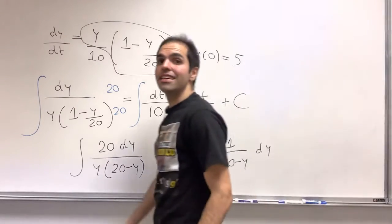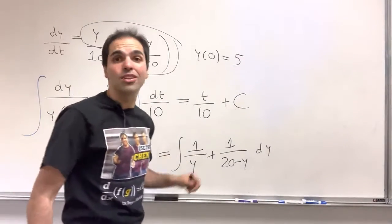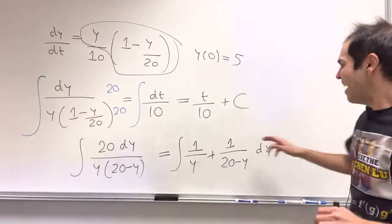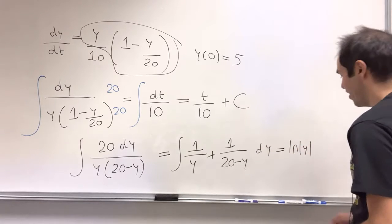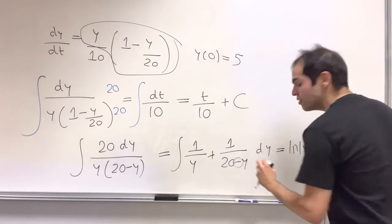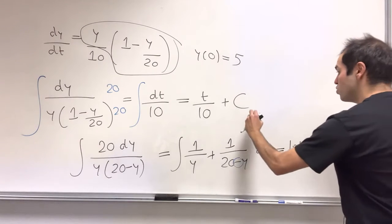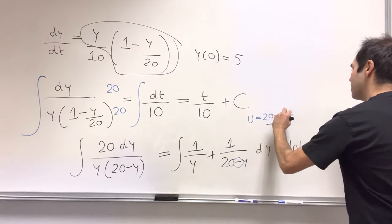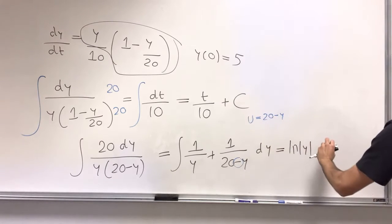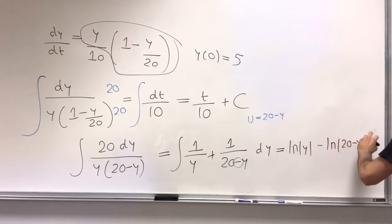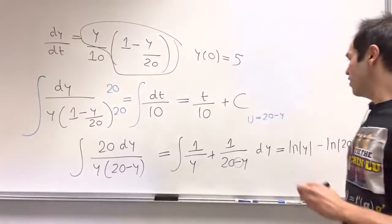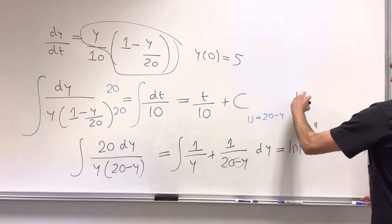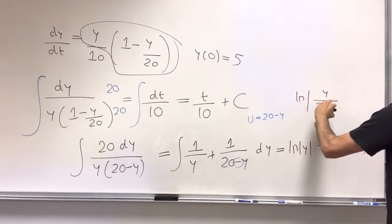So the nice thing is, in this case, the denominators, the numerators are just 1. And then, integral of 1 over y, that's ln of absolute value of y. And here, because of the minus, you could use a u substitution, u equals 20 minus y, you would actually get minus ln of 20 minus y, which then simplifies to ln of the ratio. So ln of y over 20 minus y.